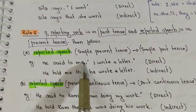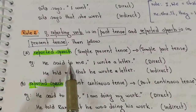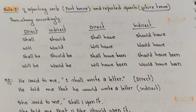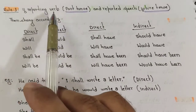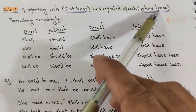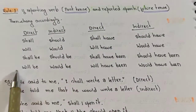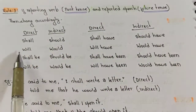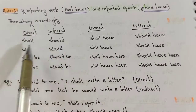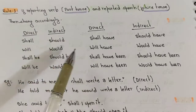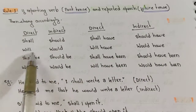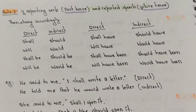Rule number three: if the reporting verb is in past tense and the reported speech is in future tense, keep these changes in mind. In indirect speech: 'shall' changes to 'should', 'will' changes to 'would', 'shall be' changes to 'should be', and 'will be' changes to 'would be'.